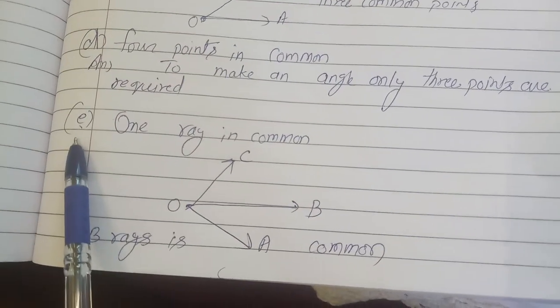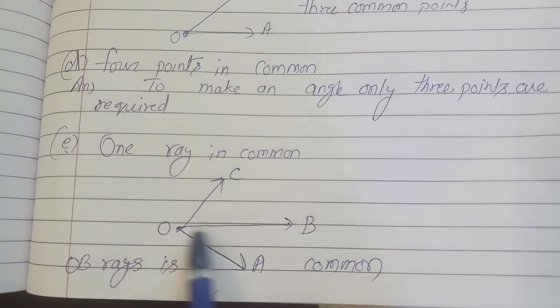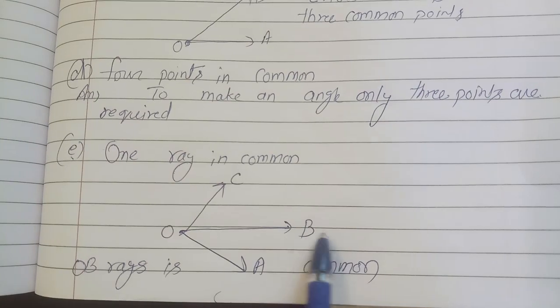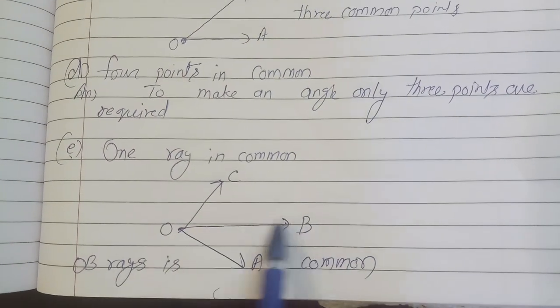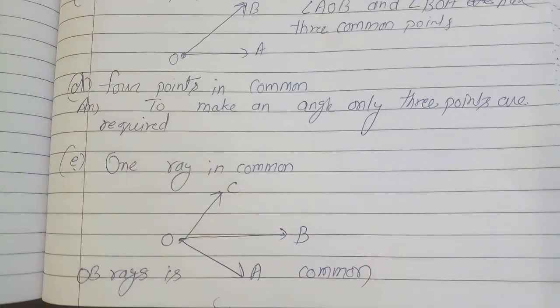E point: One ray is common. So you can see that angle COB and angle AOB - that OB is a common ray in both of those conditions. So thank you for watching this video.